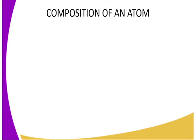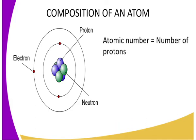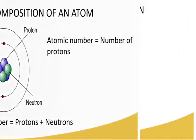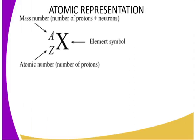As a reminder, the composition of an atom has three subatomic particles: protons, neutrons, and electrons — protons and neutrons within the nucleus, and electrons within the energy levels. The atomic number is the number of protons, and the mass number is the sum of protons and neutrons.